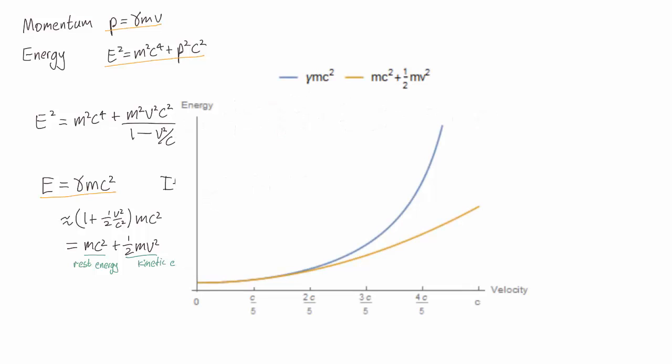And just to convince you that our approximation is legitimate, here we plot both of these energy values. So the blue line is the true energy, e equals gamma mc squared, and the yellow line is our approximation, mc squared plus a half mv squared. And you see the two are reasonably close for velocity values less than about c over 5.